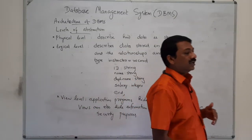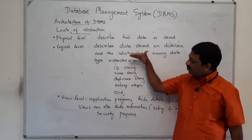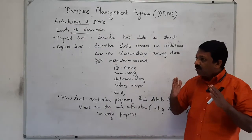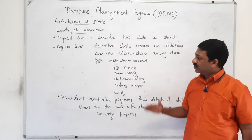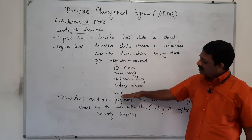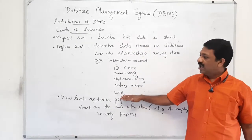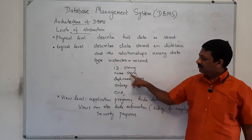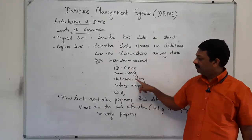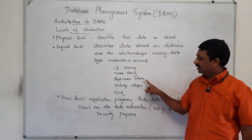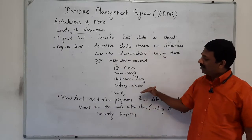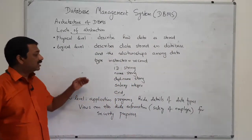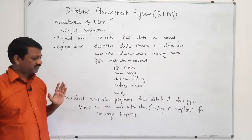It is not the duty of the programmer or the database manager to worry about how this is stored in the secondary storage device. Logically, the structure of an instructor record has an ID as a string value, name as a string value, department name as another string, and salary as an integer value. This is the logical entity, and physically how it is stored is handled by the physical layer.